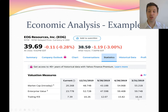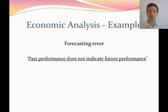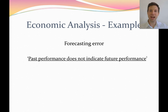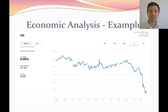Their price to earnings ratio was up around 16 and then declined down to 7 when this slide was put together. Our economic analysis reminds us that past performance does not indicate future performance. EOG had really strong revenue growth — their past performance was fantastic. But as we start to learn about what they do, that is, they're an oil company, and we start to look at their key economic indicator — the oil price — we see the oil price was up really high.